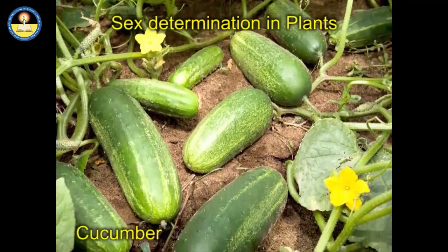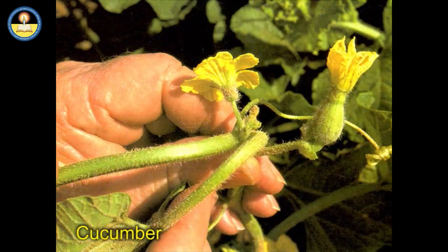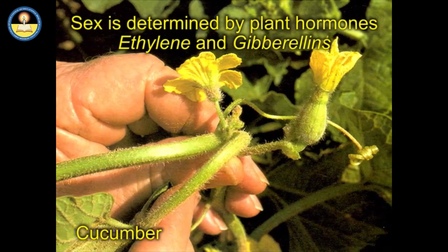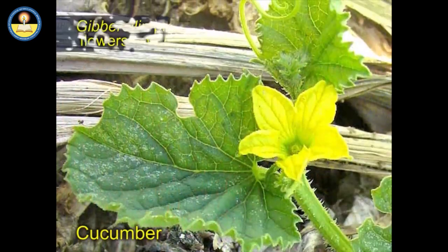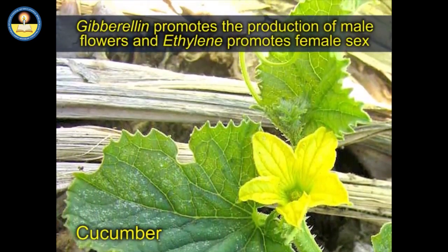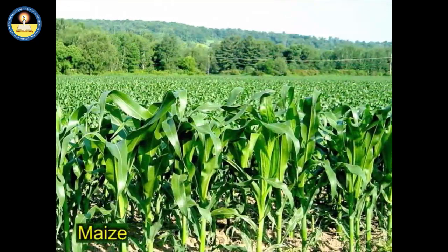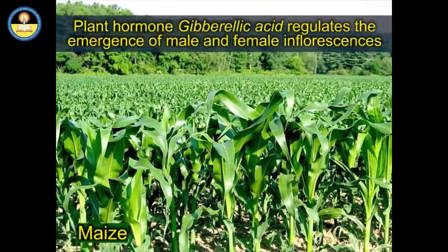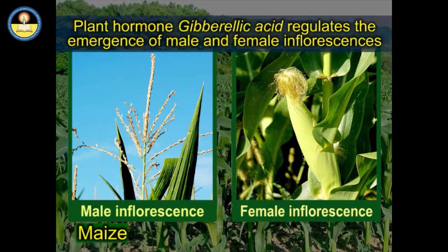Cucumber is usually monoecious, producing female flowers at the top of the inflorescence and male flowers at the bottom. It has been found that sex is determined by the concentration of plant hormones ethylene and gibberellins. Gibberellins promote the production of male flowers and ethylene promotes female sex. In maize also, plant hormone gibberellic acid regulates the emergence of male and female inflorescences. Hormone gradients in these species are genetically determined by two or three different genetic loci.